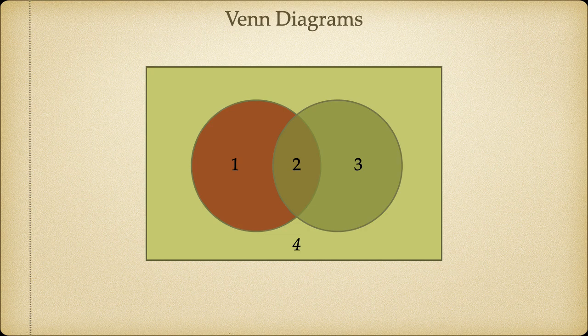Now, for our purposes, we're not going to be worrying about Region 4. But I wanted to show it to you, simply so that you know, and it can be an important part of working with Venn diagrams if we wanted to think a little bit more complexly. But we are going to focus on Regions 1, 2, and 3. So that's all for now. We'll see you next time.